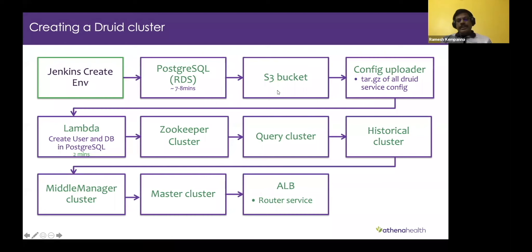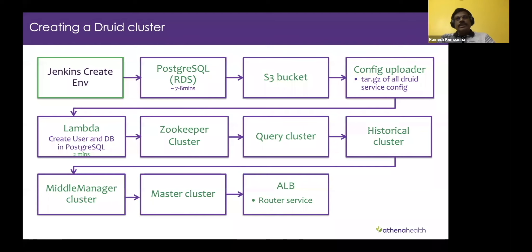We have a bunch of code that pulls from the repo, creates a tarball file, and then uploads it to the S3 bucket that was created. We also have a Lambda script that logs into the metadata database and creates the database, user, and password so that we can log into that database. Post that, Terraform kicks off and creates the main Druid cluster.